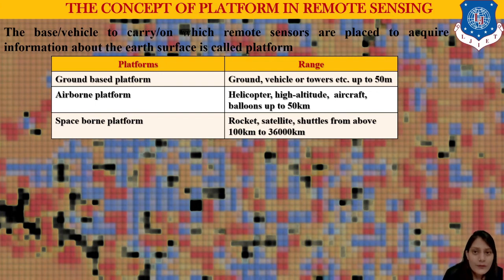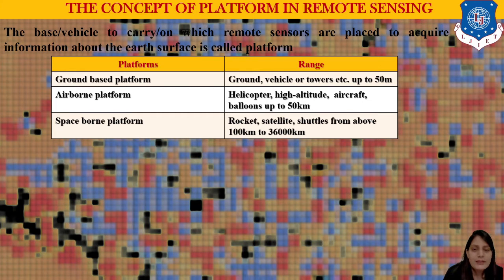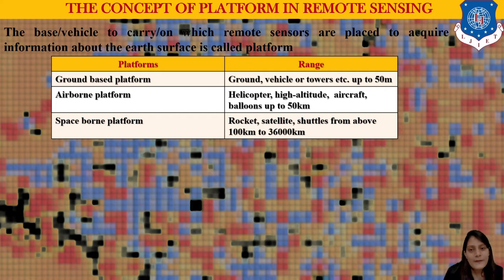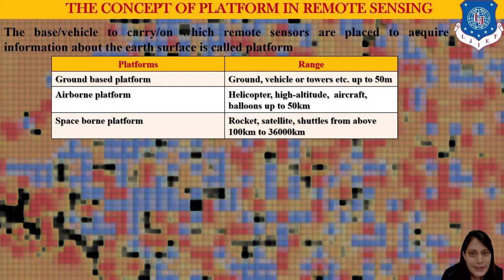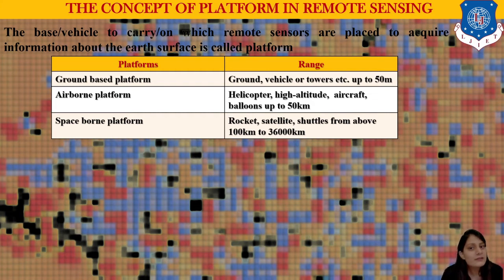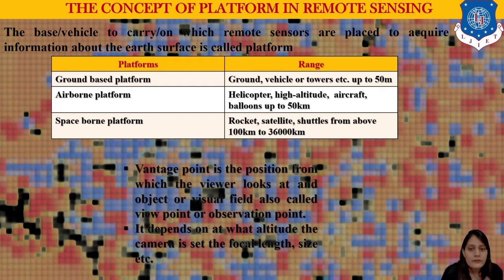The last type is the space platform: moon, rocket, satellite, shuttles from above 100 to 36,000 kilometers. These are the three major platforms. Platforms are also divided by high altitude, low altitude, high resolution, and low resolution. When it is more than 100 to 36,000 kilometers it is the space platform. If the sensor is mounted on an airborne platform at up to 50 kilometers, we get higher accuracy for identifying features.